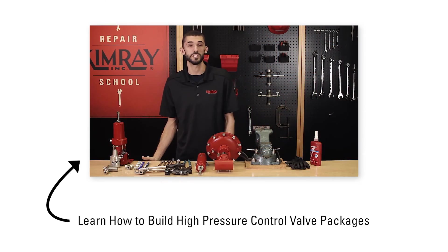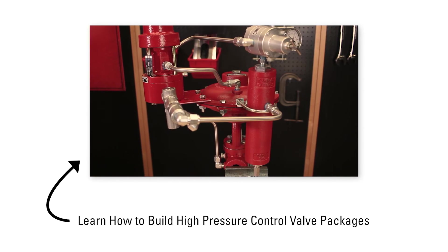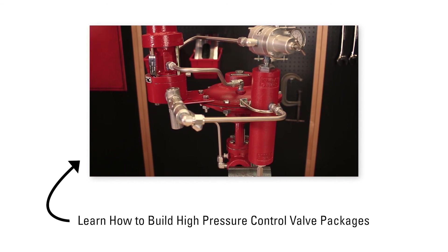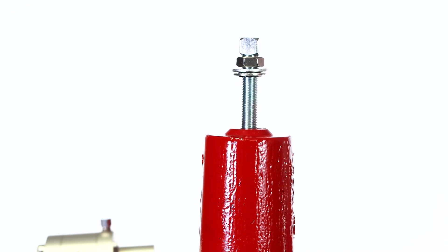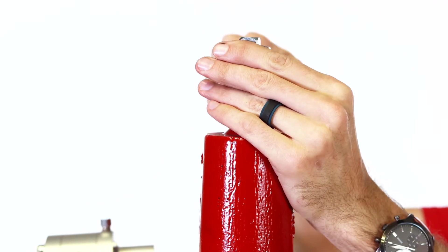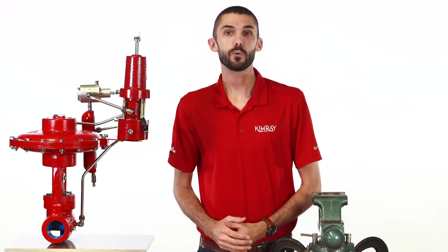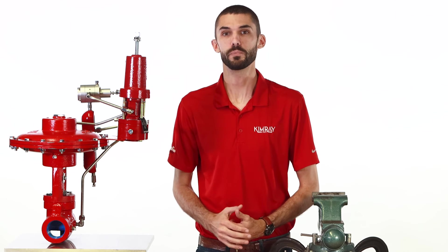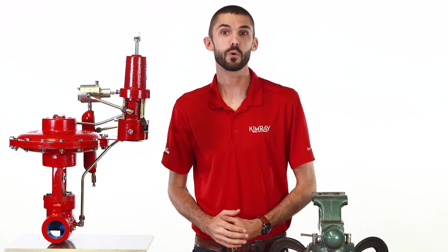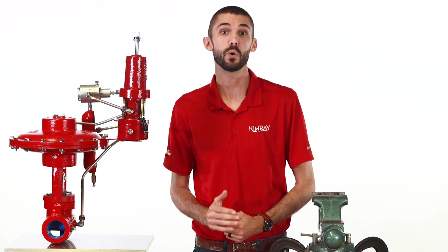For more details about building packages for back pressure or pressure reducing applications, watch our other videos for step-by-step instructions. When all the components are configured correctly to work together, put the adjusting screw back into the pressure pilot and adjust it accordingly. If you have any questions leave a comment below or call your nearest Kimray store or distributor. We can answer your questions or set up an in-person training session and demos for you and your whole team.